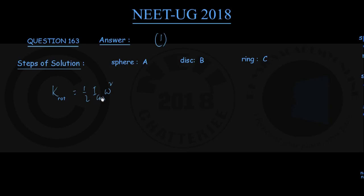In the question they have said all three objects A, B, and C have the same angular speed omega.